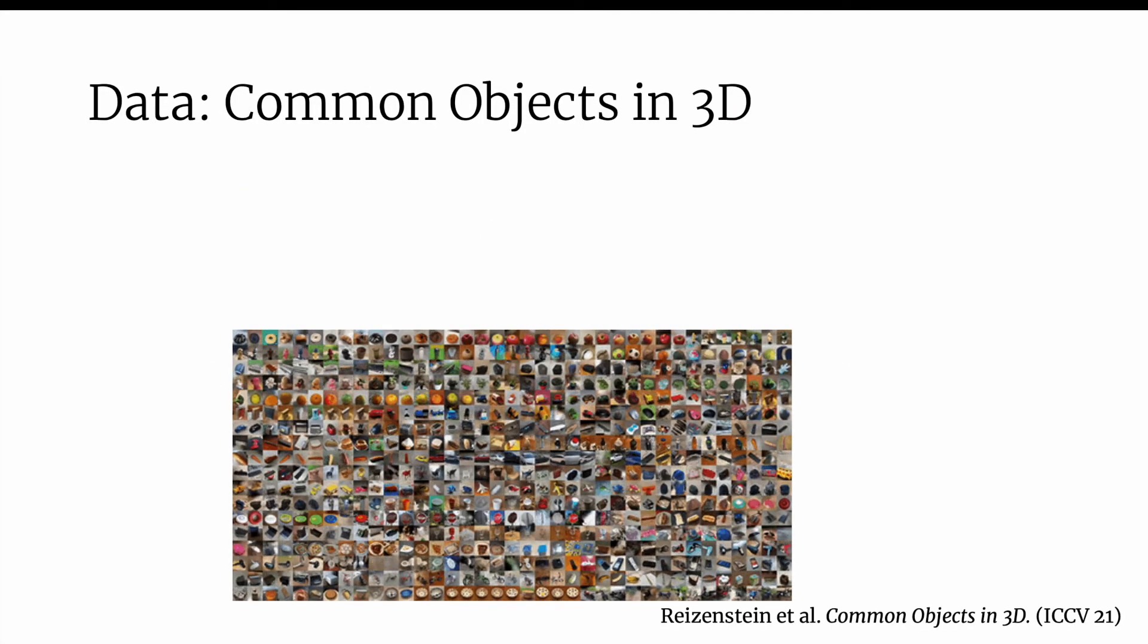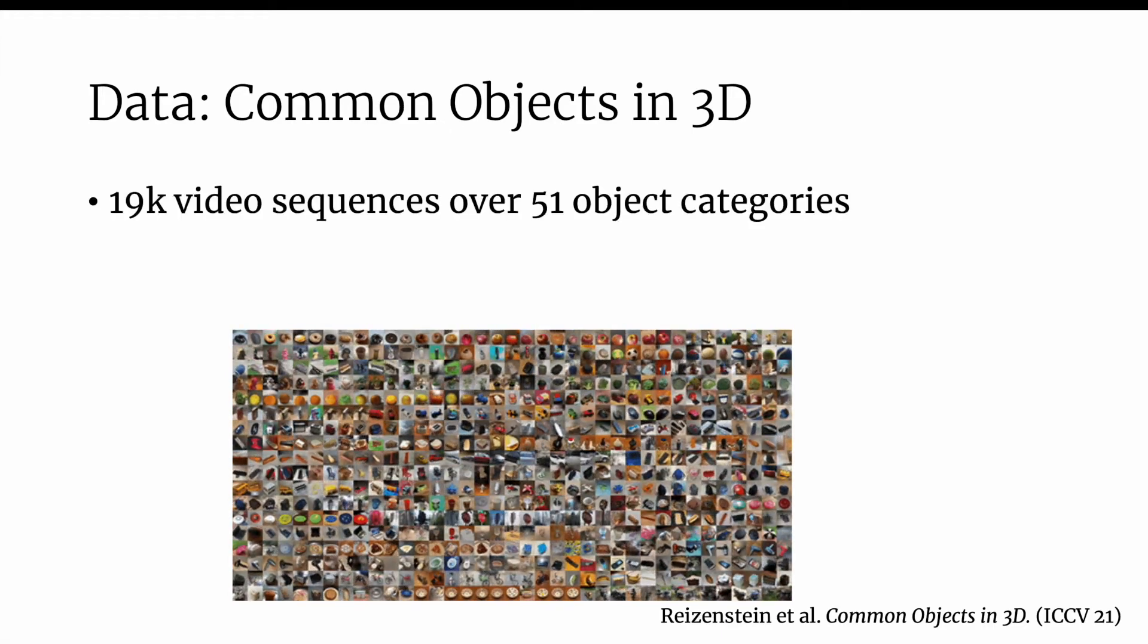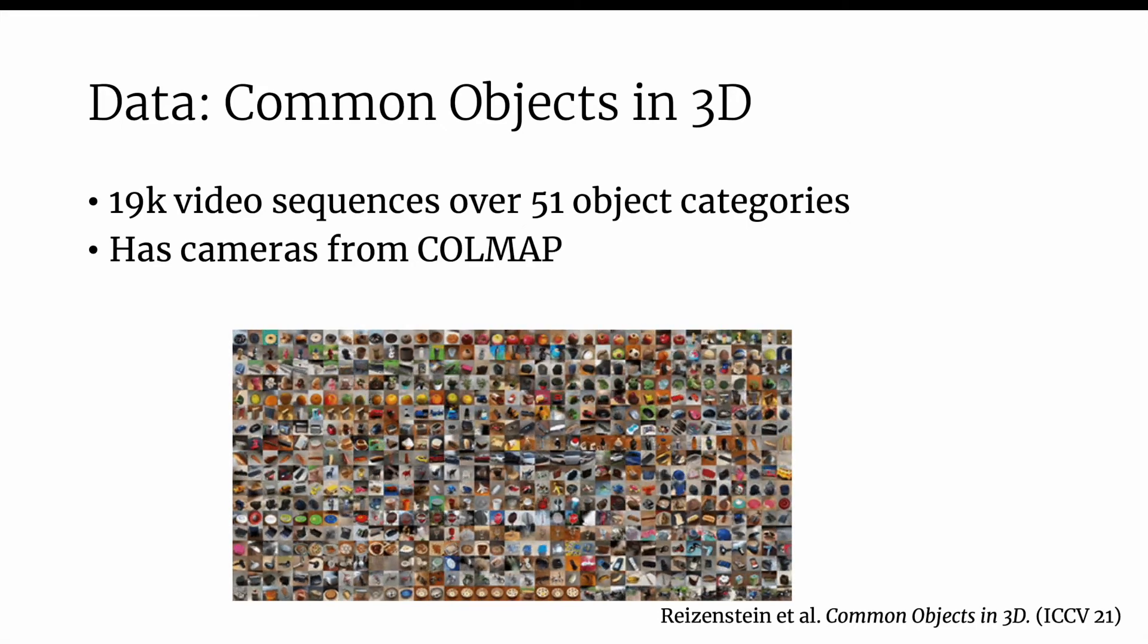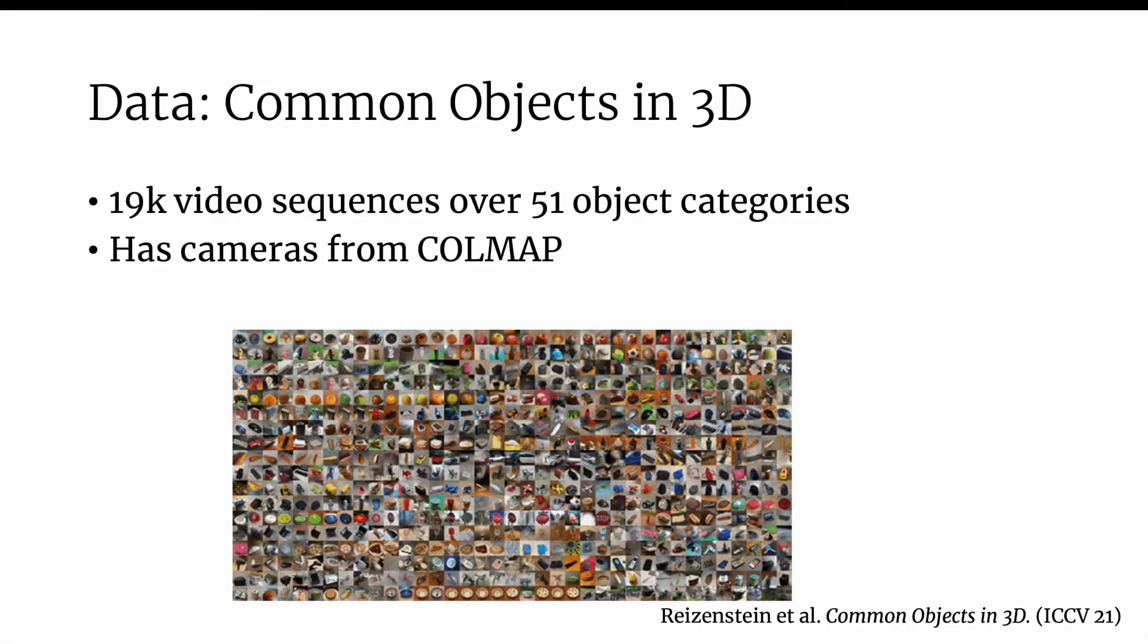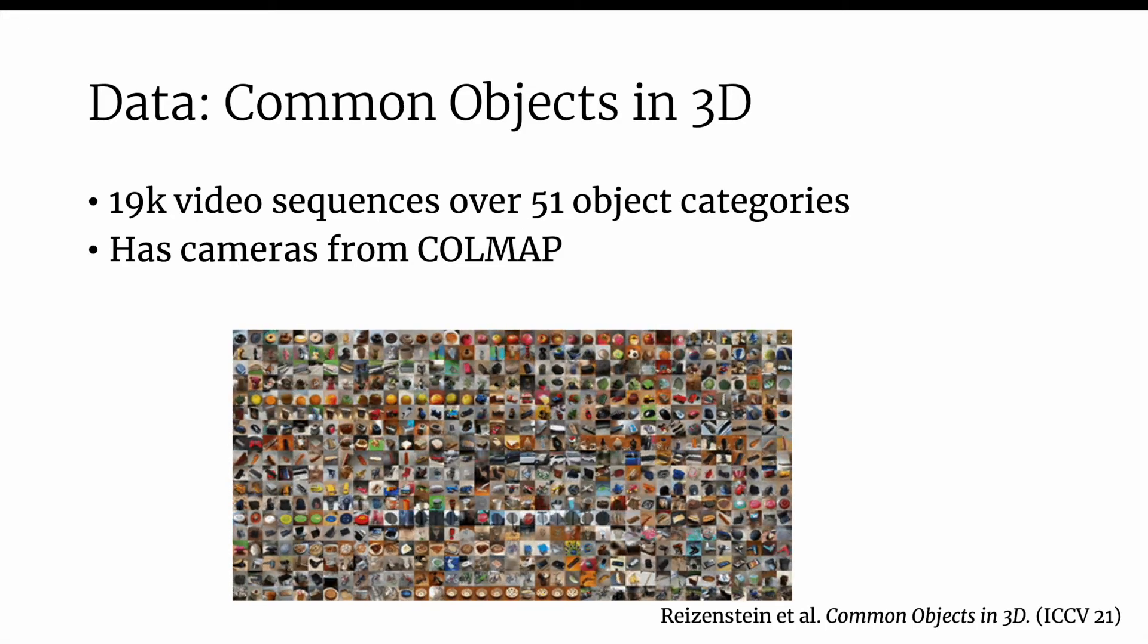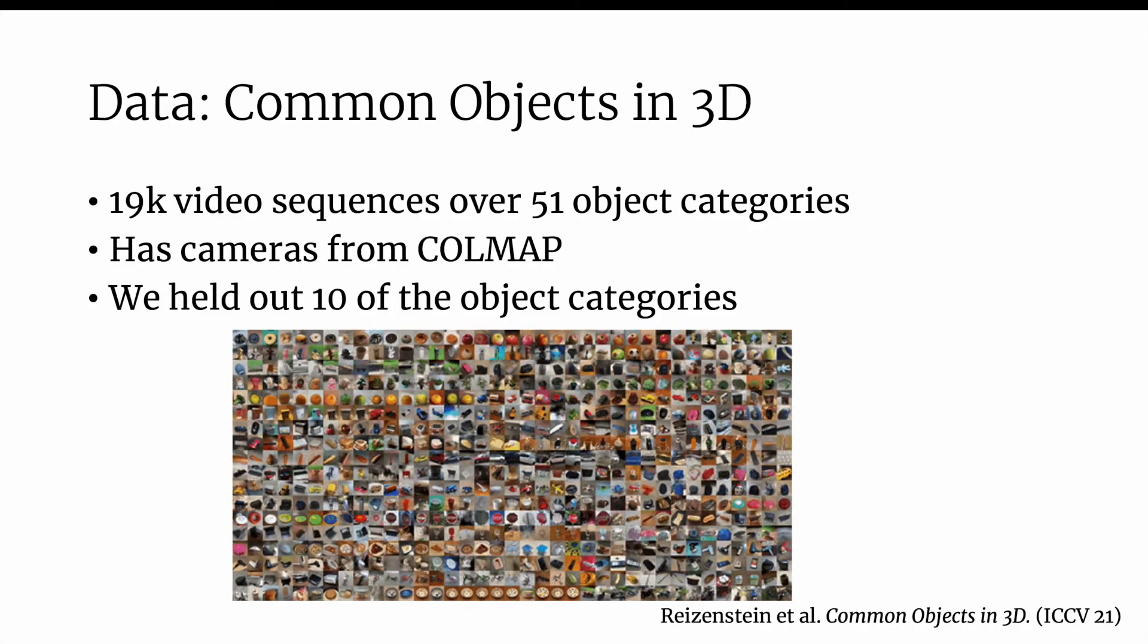We train our network on the Common Objects in 3D dataset, which contains video sequences from over 51 object categories. Each video sequence has ground truth cameras acquired using COLMAP. Note that these camera poses lie in an arbitrary coordinate system, and we can only use them because we operate on relative poses. We hold out 10 object categories to test generalization.